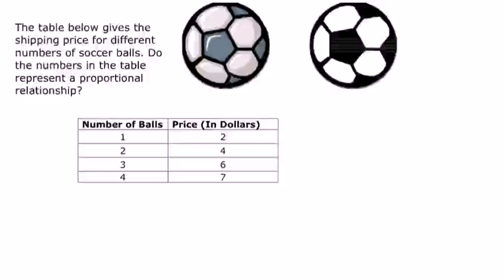The table below gives the shipping price for different number of soccer balls. Do the numbers in the table represent a proportional relationship? So is this proportional? Everything right here.